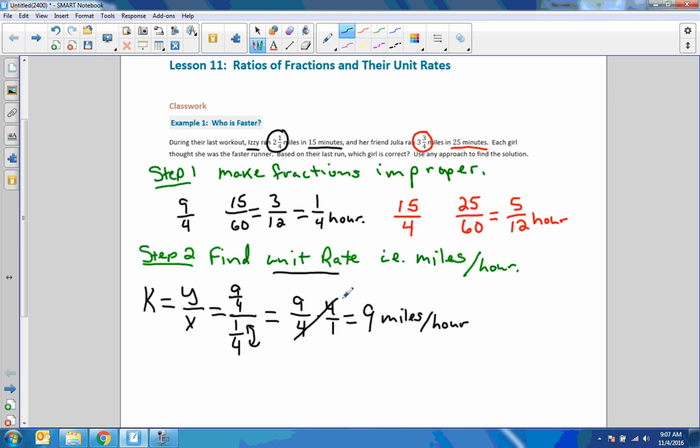And that was for Izzy, ran 9 miles per hour. Now we have to do the same for Julia. So again, I'm going to write the formula. And the reason we do this is so that we can memorize it. Here, k equals y over x, which equals miles, 15 quarters, divided by hours, 5 twelfths. Bring over the 15 quarters, change division to multiplication, and flip the denominator and call it 12 fifths. Now we can cancel, 4 goes into 4 once, 4 goes into 12, 3 times, 5 goes into 5 once, 5 goes into 15, 3 times. And we get 3 times 3 is 9 over 1, or just 9. And she runs 9 miles per hour.